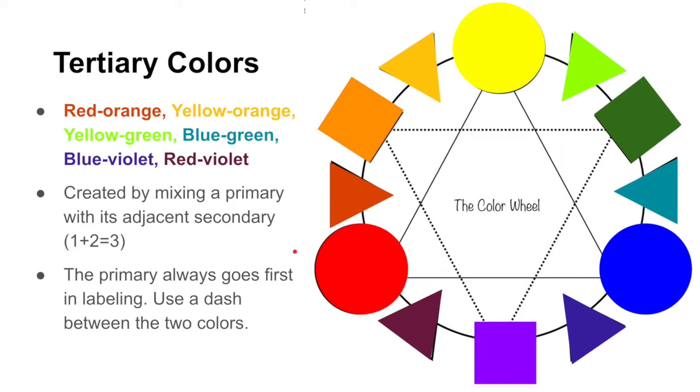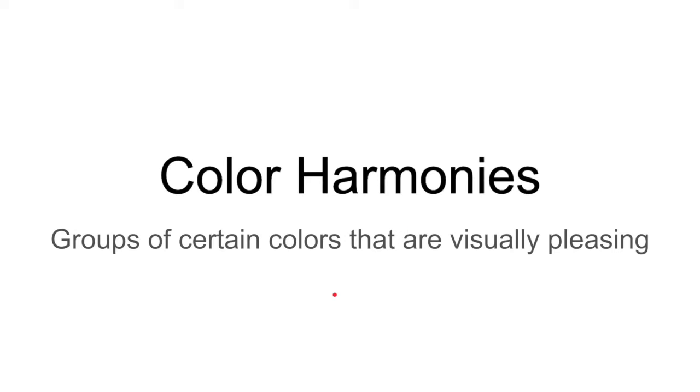So that's a quick rundown of all the colors on the color wheel. Now we're going to talk about color harmonies. And color harmonies are groups of certain colors that are aesthetically pleasing, things that look really nice to the eye and we enjoy them together.